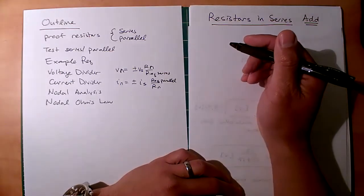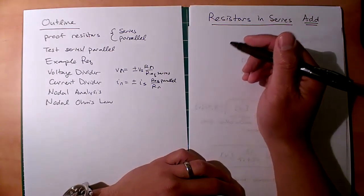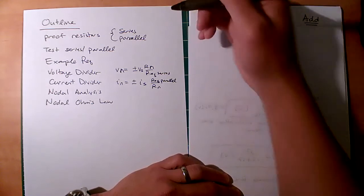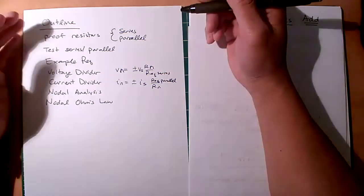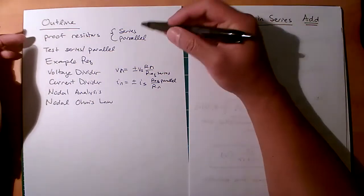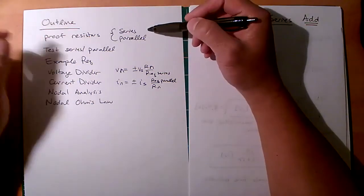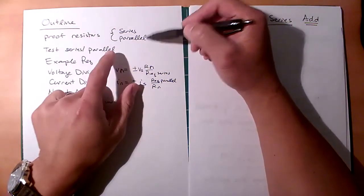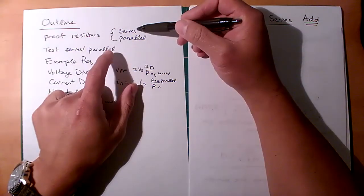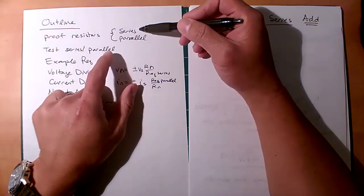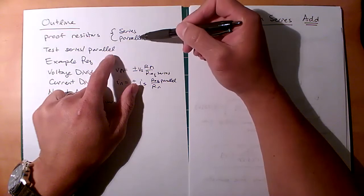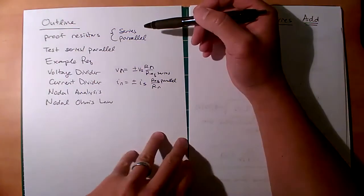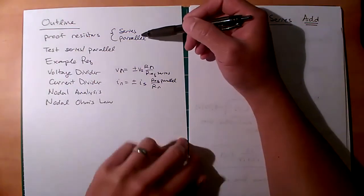Hi there. This is lecture four for ET250. The topics we're going to cover today are proof for resistors in series and in parallel — showing how the simple equations came to be using our fundamentals of Ohm's law, KVL, and KCL.